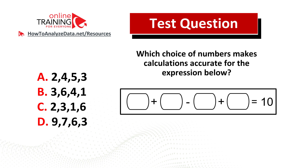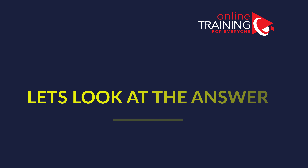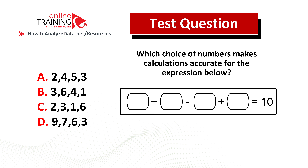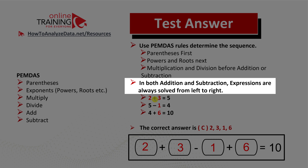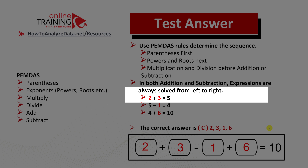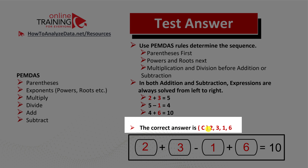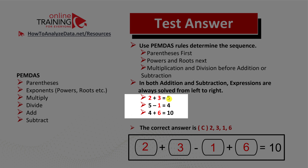Now might be a good time to pause this video to see if you can come up with the solution on your own. Since we only have addition and subtraction, we can solve this expression from left to right. The correct choice is choice C with the numbers 2 3 1 6. When we add 2 plus 3 we get 5, 5 minus 1 equals 4, and 4 plus 6 equals 10.